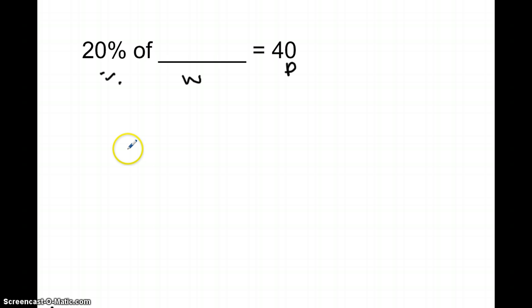In this problem it says 20 percent of what number is 40? To give the kids the scenario again, I would say you have, we don't know how much money is in your account. Your parents allowed you to have 40 dollars, which is 20 percent of your money. How much money is in your account? And then they would be able to identify that the whole is missing. So they can again set up the ratio table two different ways.